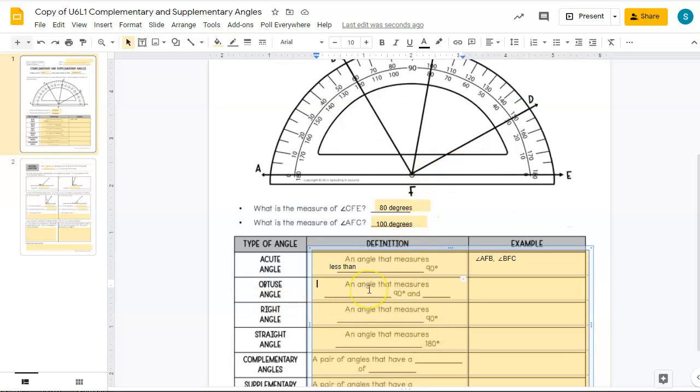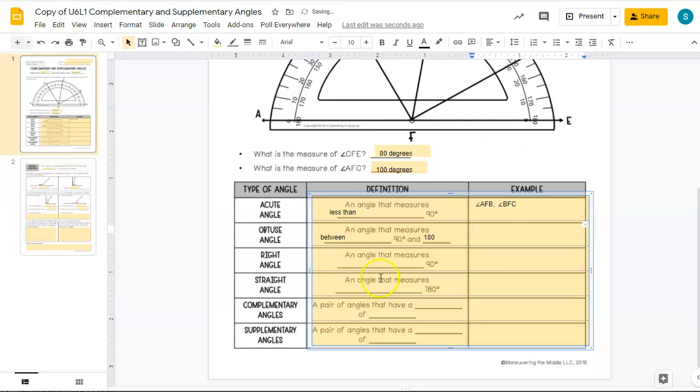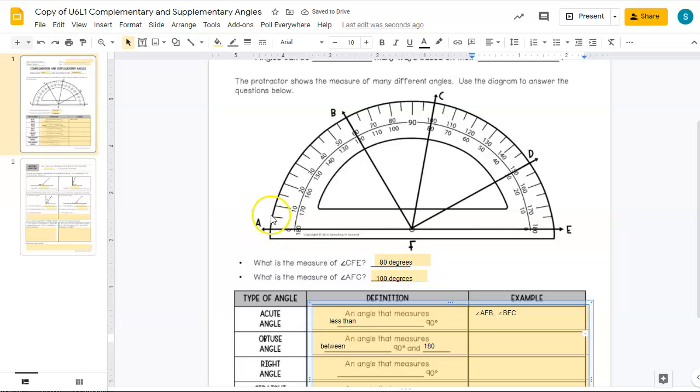So an obtuse angle is an angle that measures between 90 degrees and 180 degrees. All right. Now, that one, so we need to go past 90. So angle AFC would work. Angle BFE would work. Angle AFD would work. So we've got lots of angles that would be there.